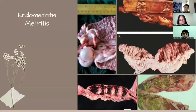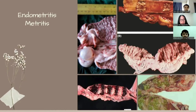Metritis is defined as the inflammation of the uterus that develops in the immediate postpartum period and can occasionally occur after abortion or breeding. Metritis is inflammation of the uterus due to bacterial infection, usually occurring within a week after a dog has given birth. It can also develop after a natural or medical abortion, miscarriage, or after a non-sterile artificial insemination. Predisposing causes include prolonged delivery, dystocia, and retained fetus or placenta.